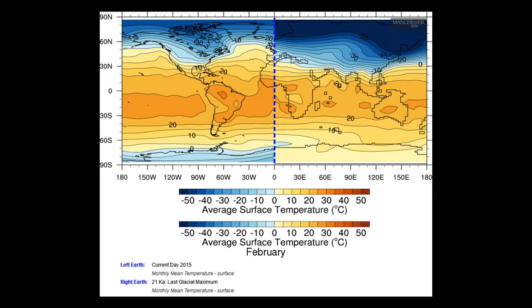Here is an example of output from such a GCM. On the left side we see current day temperatures, and on the right side we see temperatures during the LGM at the same months, where you can see it's colder in some regions and warmer in others. This gives you a little bit of an understanding of how these climate models actually work when you start playing around with them.